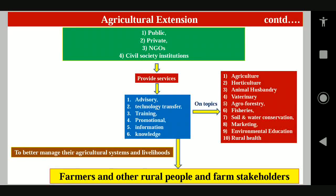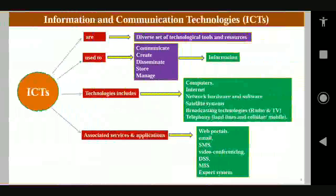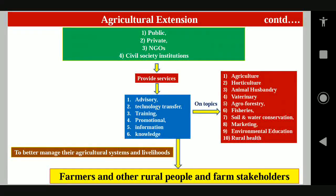These services are provided on topics such as agriculture, horticulture, animal husbandry, veterinary, agroforestry, fisheries, soil and water conservation, marketing, environmental education, rural health, etc. These services are provided by these institutions to better manage agriculture systems and livelihoods of the farmers, other rural people, and farm stakeholders. Their social economic status and livelihood status are also increased through agricultural extension.